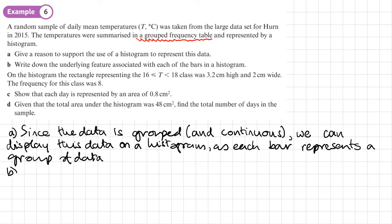Okay, so let's move on to part B. Write down the underlying feature associated with each of the bars in a histogram. So the underlying feature is that each bar or the area of each bar is proportional to the frequency. Area of each bar is proportional to its frequency.